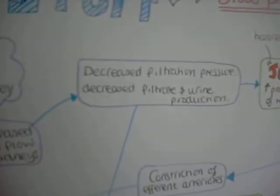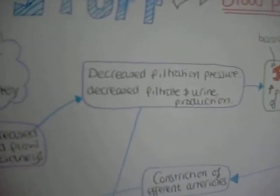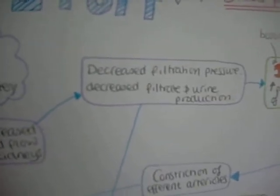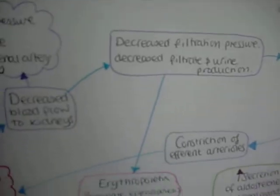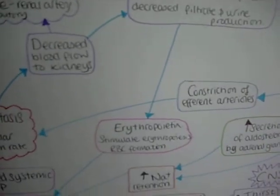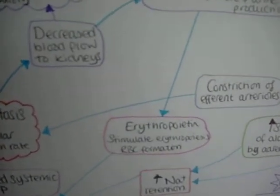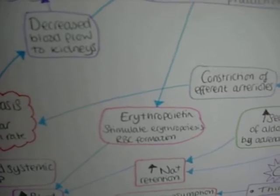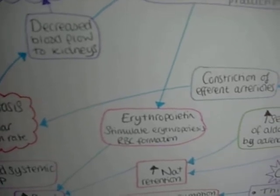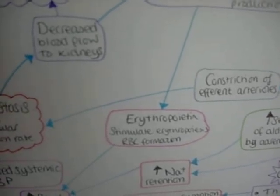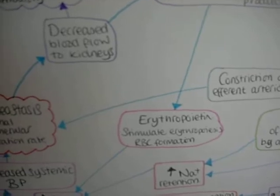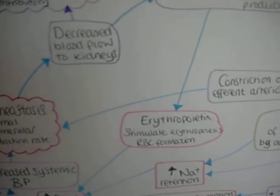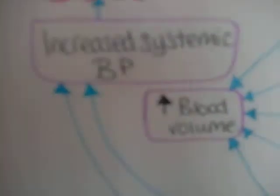This causes decreased filtration pressure and decreased filtrate and urine production. This can directly stimulate the production of erythropoietin by the JGA, which stimulates erythropoiesis and red blood cell formation and maturation, which increases blood volume.